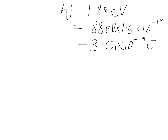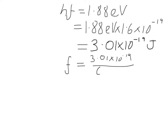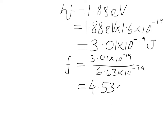That gives us a final frequency: we take the energy 3.01 times 10 to the minus 19 joules divided by Planck's constant, 6.63 times 10 to the minus 34 (from the formula sheet), and that gives us a final frequency of 4.53 times 10 to the 14 hertz.